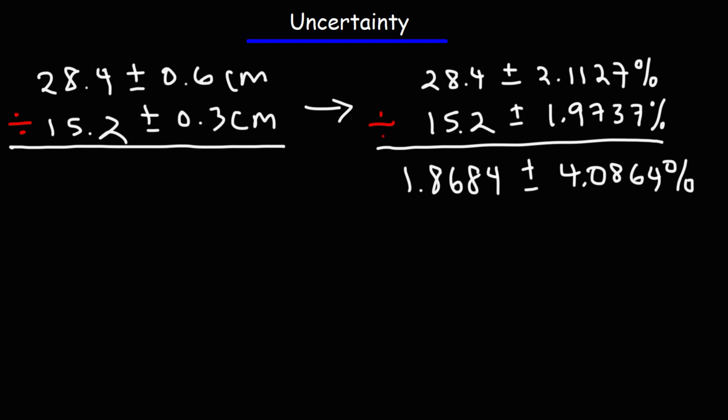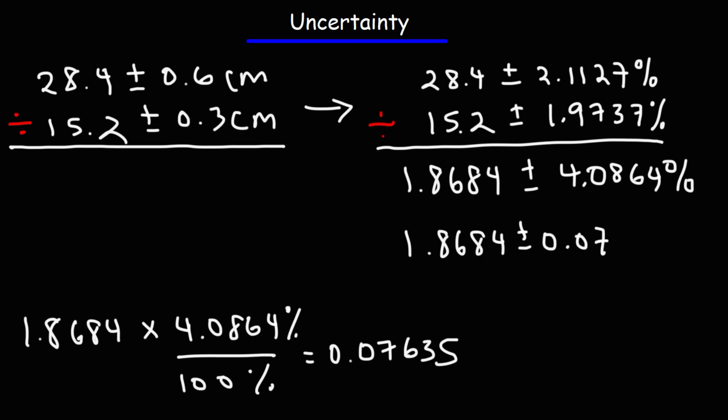All right, so now that we've done the operation, let's convert the percent uncertainty into a non-percentage uncertainty value. So what is 4.0864% of that number, 1.8684? That's going to be 1.8684 times 4.0864% divided by 100%. So this works out to be 0.07635. So this is going to be 1.8684 plus or minus 0.07635.